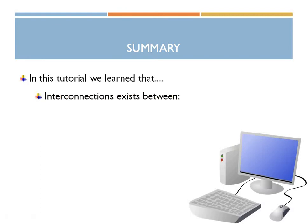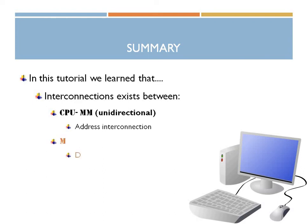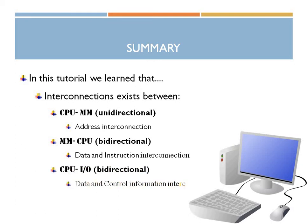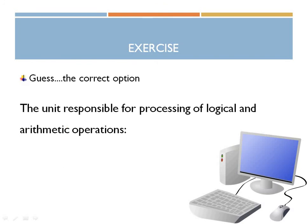For the interconnections that exist between various modules: the first was between CPU and main memory — uni-directional — called the address interconnection. The second was between main memory and CPU — bi-directional — known as the data and instruction interconnection. The third was between CPU and I/O — bi-directional — called the data and control information interconnection.